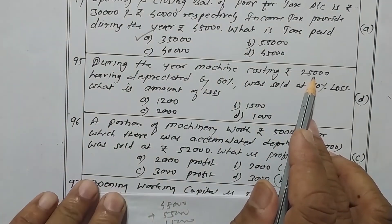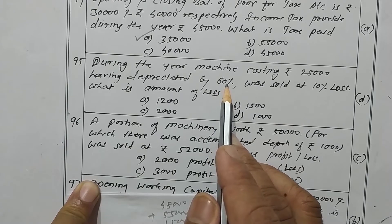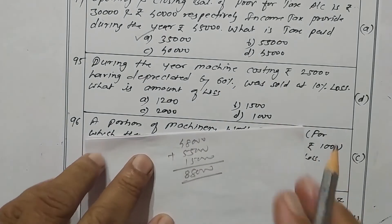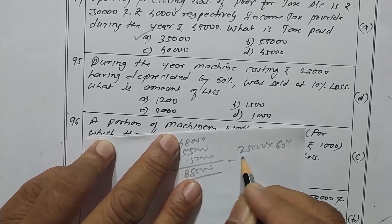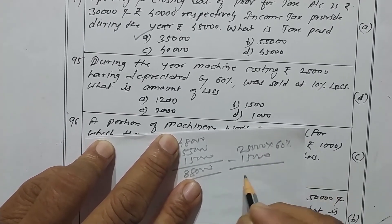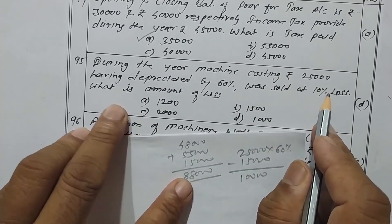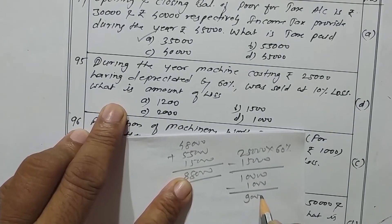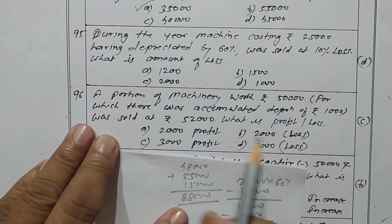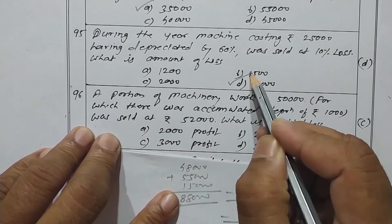Machinery costing rupees 25,000 having depreciation of 60 percent means book value is rupees 10,000. 25,000 into 60 percent gives rupees 15,000 accumulated depreciation, so book value is rupees 10,000. It was sold at 10 percent loss, meaning a loss of rupees 1,000, so sale price is rupees 9,000. Loss is rupees 1,000. Option D is the correct one.